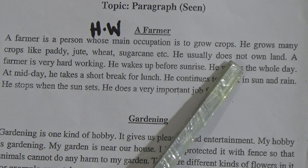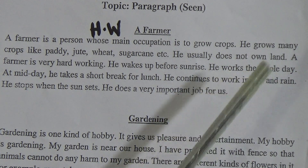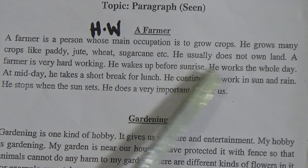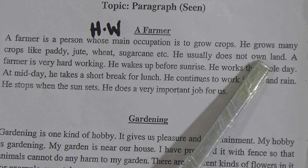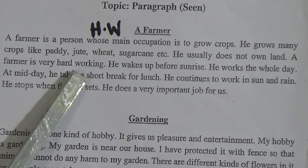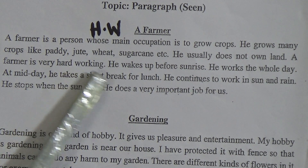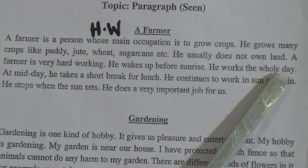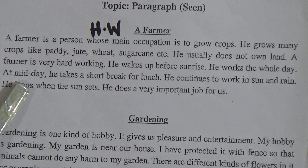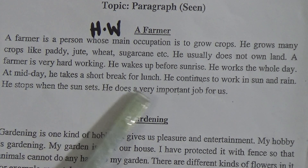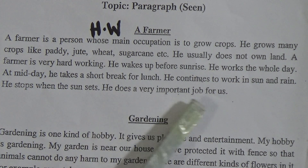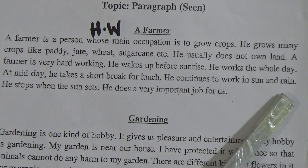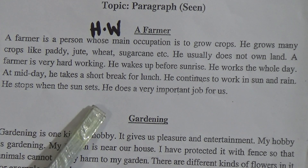He usually does not own land — that means he usually doesn't have his own land or property. A farmer is a very hardworking person. He wakes up before sunrise. He works the whole day. At midday, he takes a short break for lunch. He continues to work in sun and rain. He stops when the sun sets.